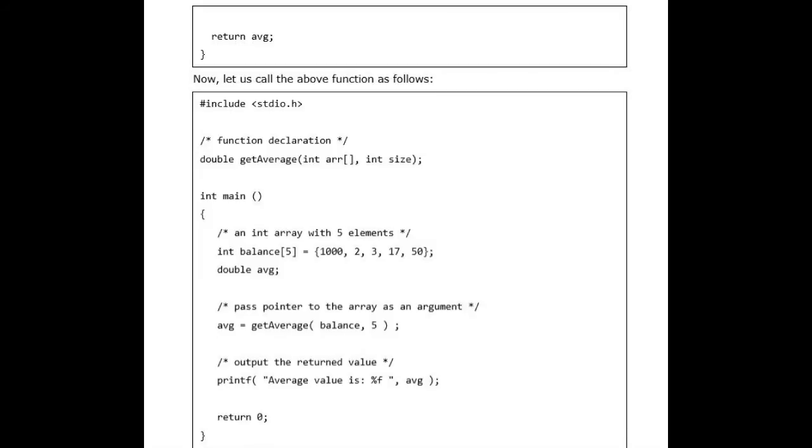/* output the returned value */ printf("Average value is: %f", avg); return 0; } When the above code is compiled together and executed, it produces the following result: